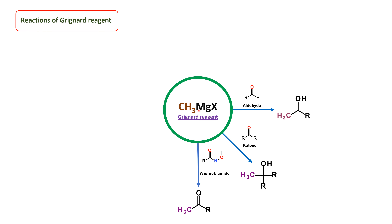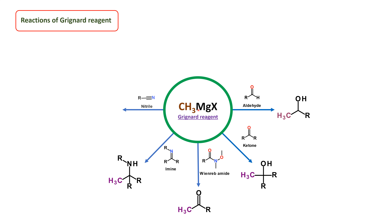The Grignard reagent can be used to get ketone from the Weinreb amide, and also secondary amine from the imine. And get the ketone from the nitrile.